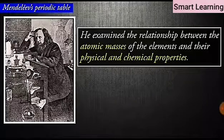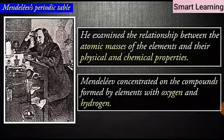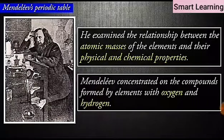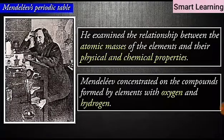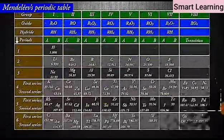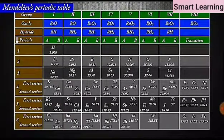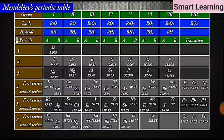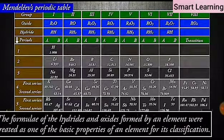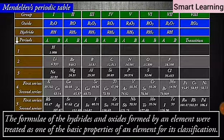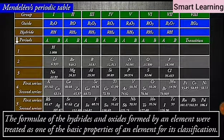Among chemical properties, Mendeleev concentrated on the compounds formed by elements with oxygen and hydrogen. He selected hydrogen and oxygen as they are very reactive and form compounds with most elements. The formulae of the hydrides and oxides formed by an element were treated as one of the basic properties of an element for its classification.